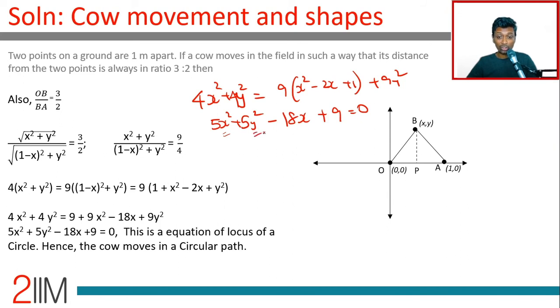x square and y square coefficients are the same. That means it's got to be a circle. This is x square plus y square minus 18 by 5 x plus 9 equal to 0.